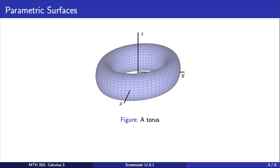For example, consider a torus, also known as a doughnut, where the radius from the center of the hole to the center of the tube is 1, and the radius of the tube is also 1.